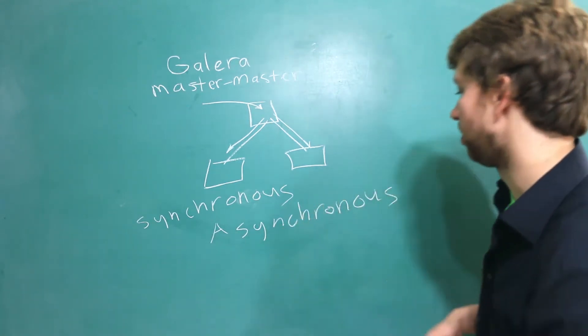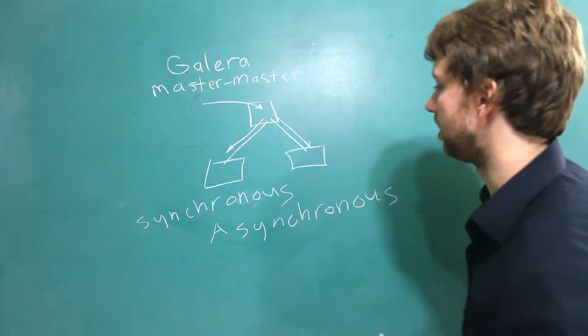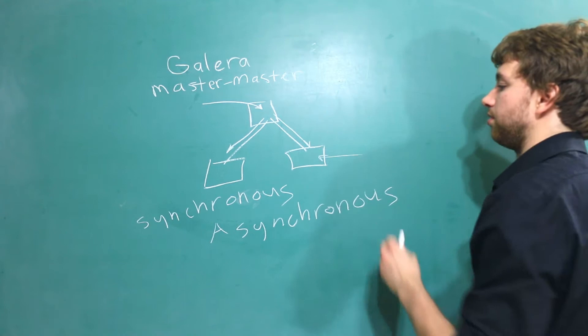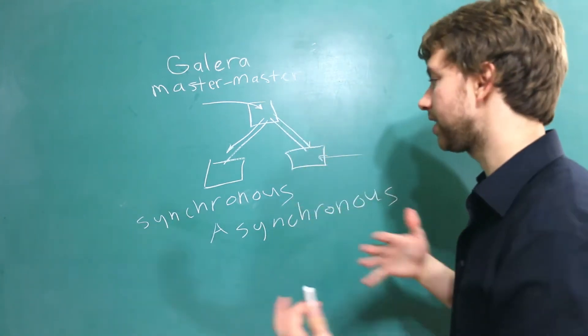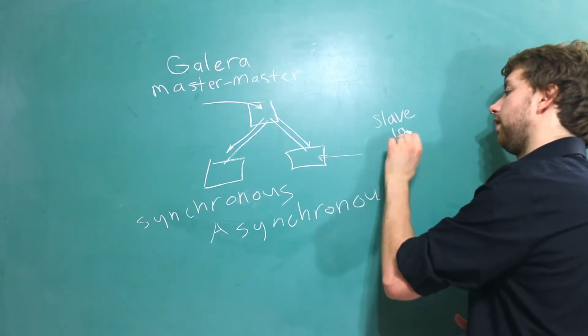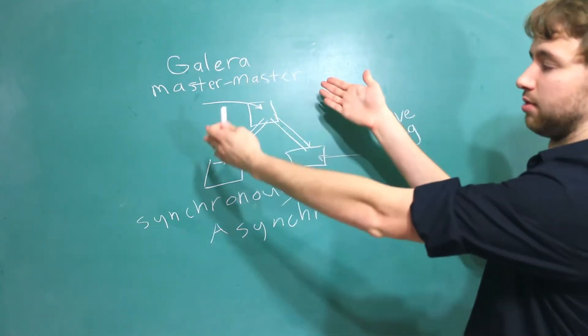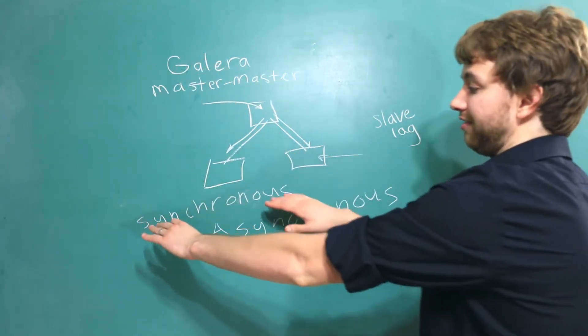So essentially when you're working with asynchronous transfer you cannot always be guaranteed that these nodes the ones that are getting replicated to are up to date and that's a term called slave lag. And it's kind of weird because we're in a master master topology here but Galera actually is synchronous which is a little different.